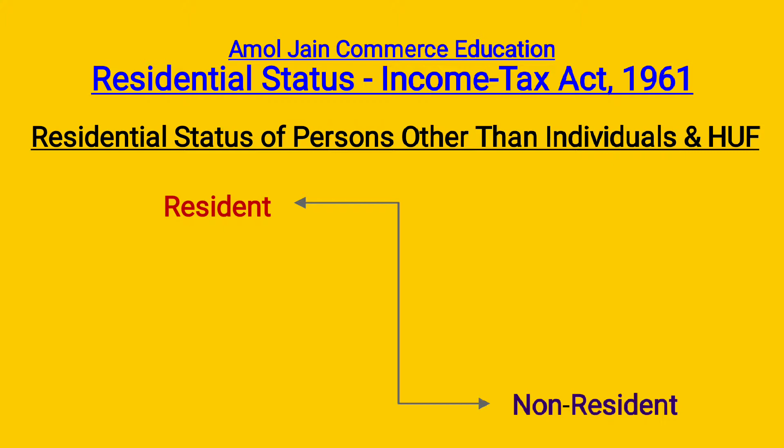Residential status of persons other than individuals and HUF: Individuals और HUF को छोड़कर बाकी जितने भी other persons हैं — like company, firm, AOP, BOI — ये सब भारत में या तो resident होंगे, या तो फिर non-resident होंगे।